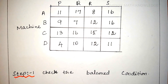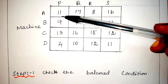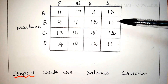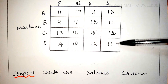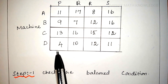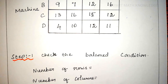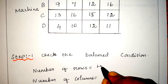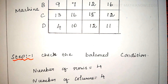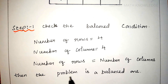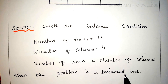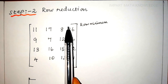The first step is to check the balanced condition — that is, whether the number of rows is equal to the number of columns or not. The horizontal ones are rows and the vertical ones are columns. The number of rows is 4 and the number of columns is 4. Since the number of rows equals the number of columns, the problem is a balanced one.